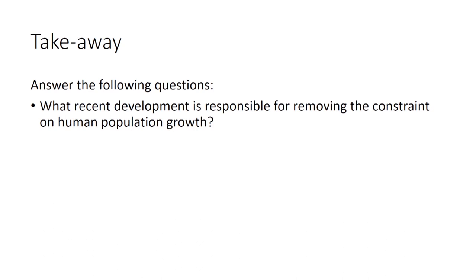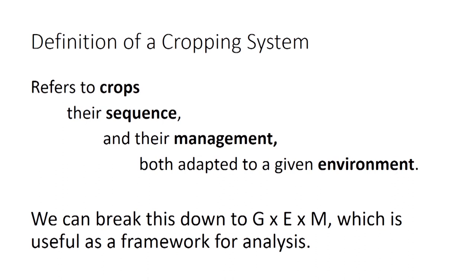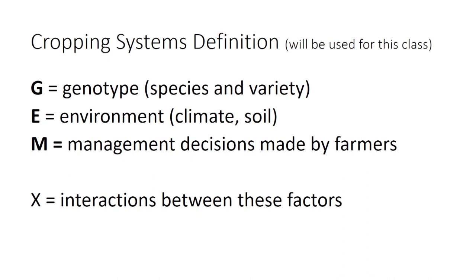There's also a feedback loop because farmers are going to help refine and improve those technologies over time. So this course is called Cropping Systems — let's define what that is. A cropping system refers to crops, their sequence (also called their rotation), and their management, all adapted to a given environment. We analyze cropping systems using the G by E by M framework, which is the linchpin of this course and is also used in the field by actual practicing agronomists — it's not just an academic exercise. G refers to genotype, E refers to environment, and M refers to management.